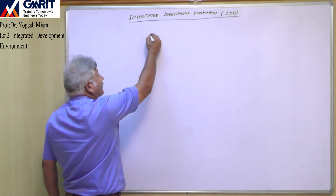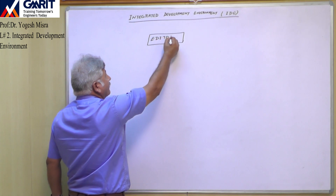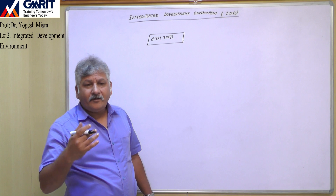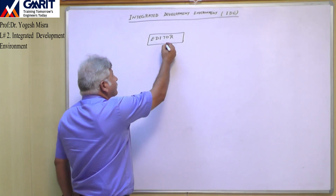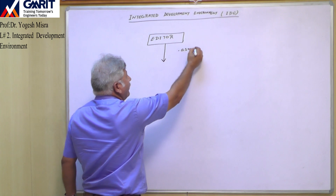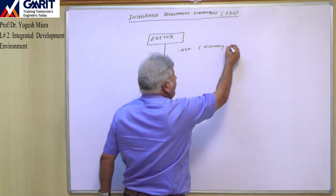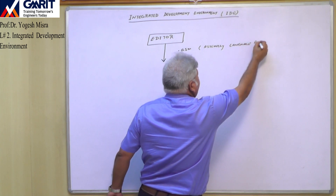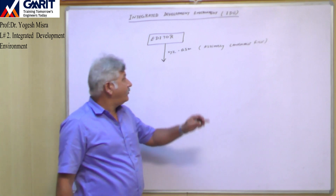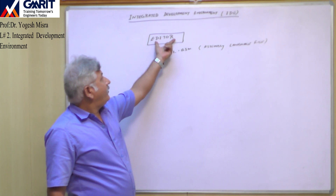The first tool we require is an editor. The purpose of the editor is to generate an assembly language file. This editor will generate a file with the extension .asm — for example, xyz.asm — and this is our assembly language source file.